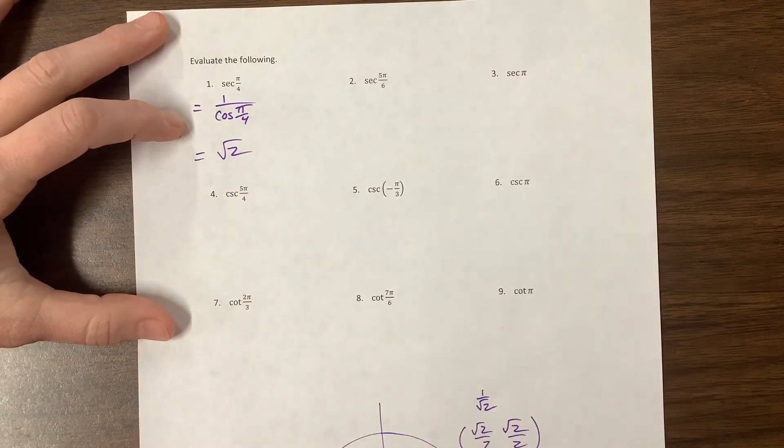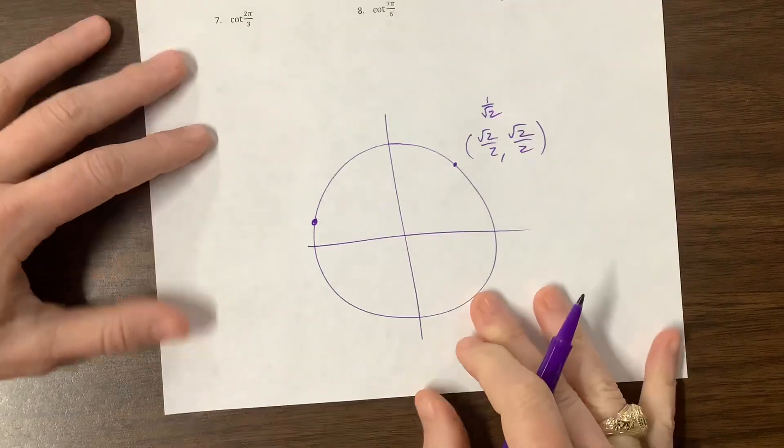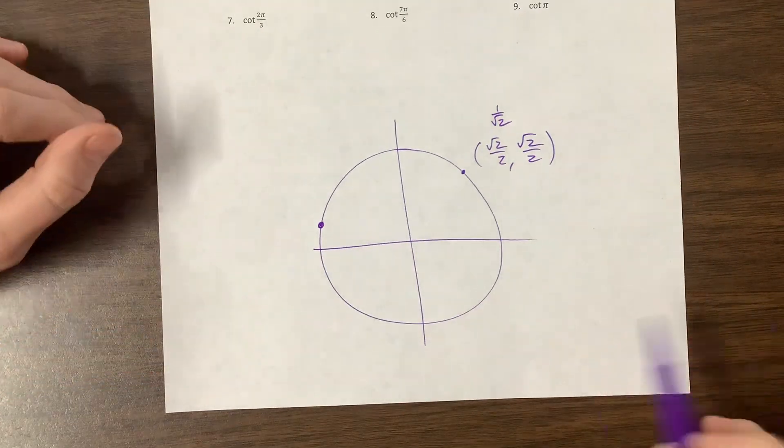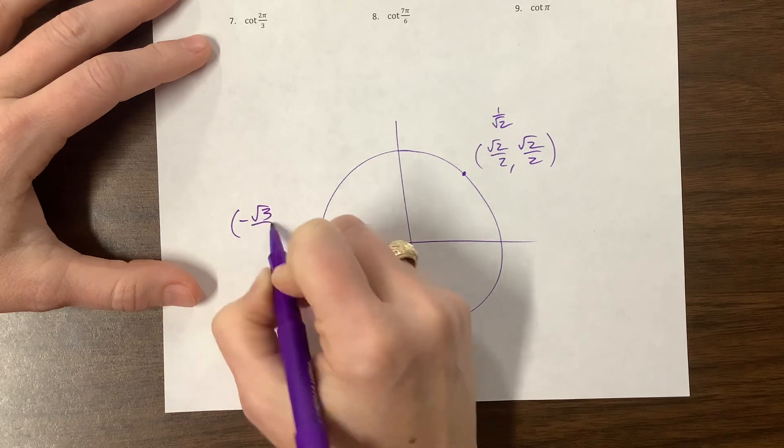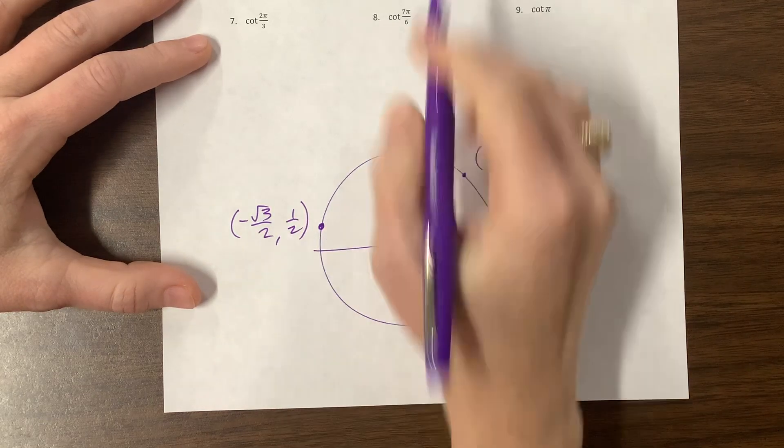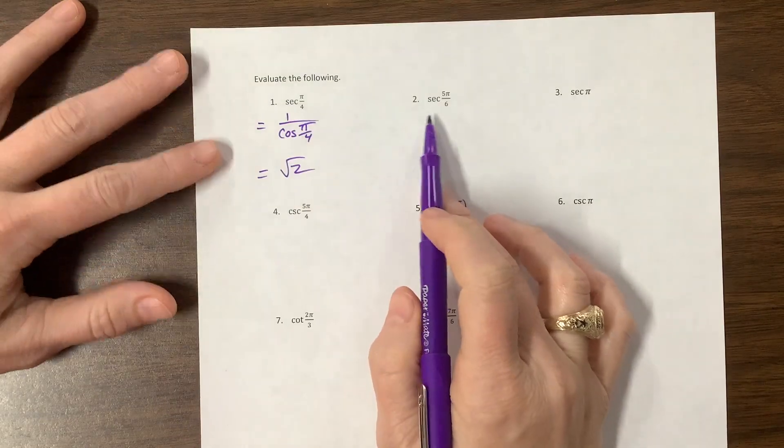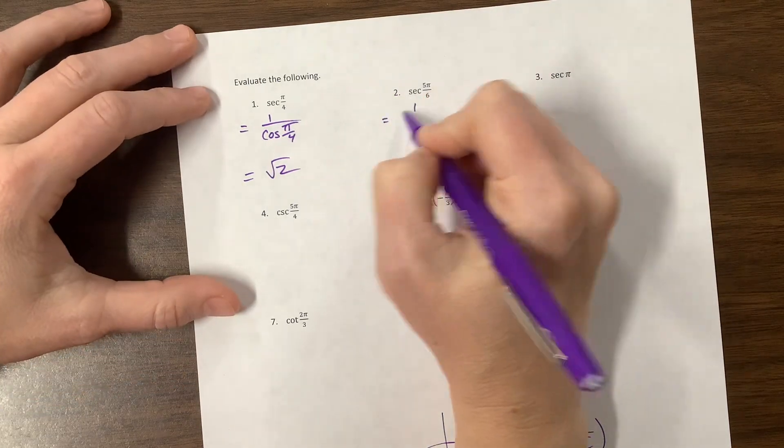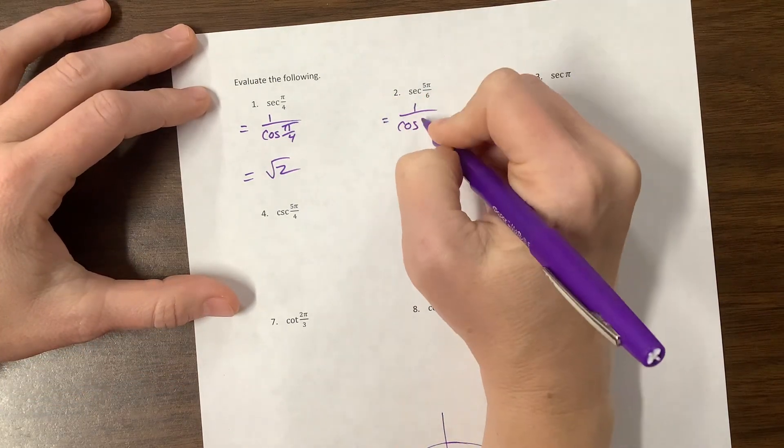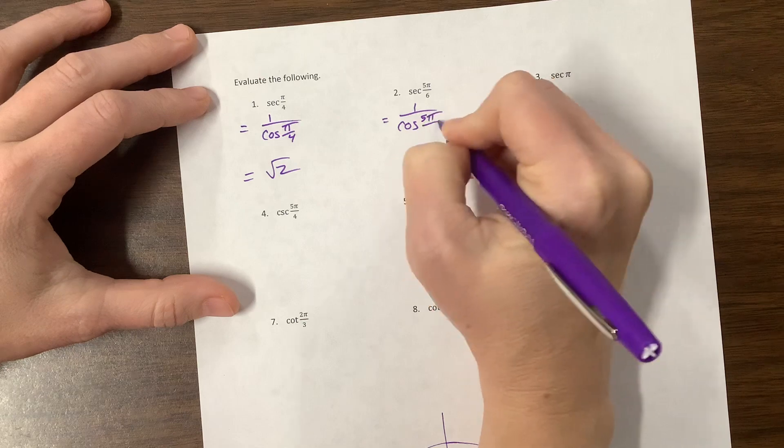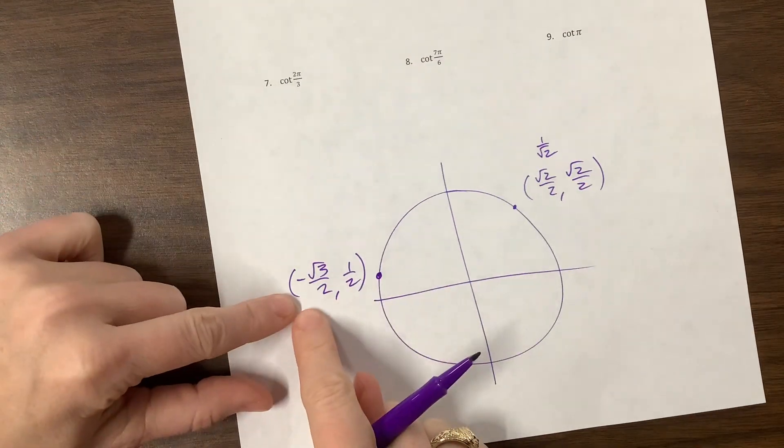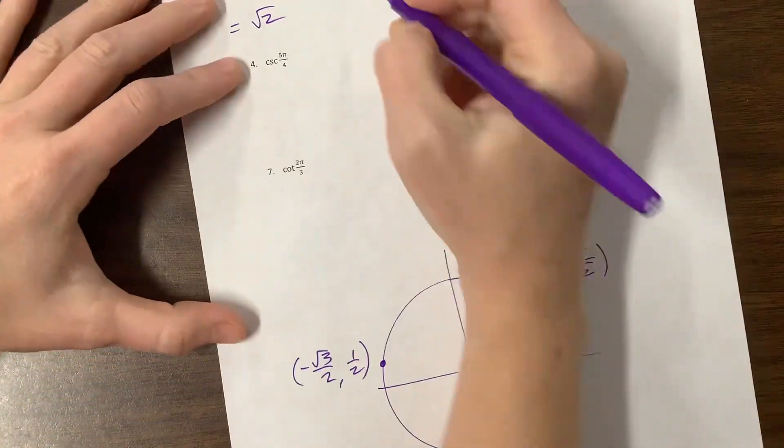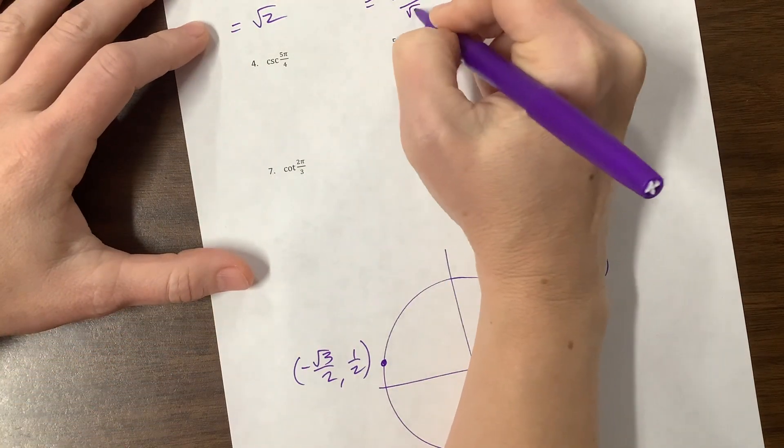Okay. And the secant of 5 pi over 6, so here is, on my unit circle, 5 pi over 6 is not exactly there, but good enough. And so it's got a negative root 3 over 2 for the x value and a positive 1 half. Secant is 1 over cosine. So this is 1 over cosine of 5 pi over 6. Cosine is the x value. Our x value is this. So we need to take the reciprocal,